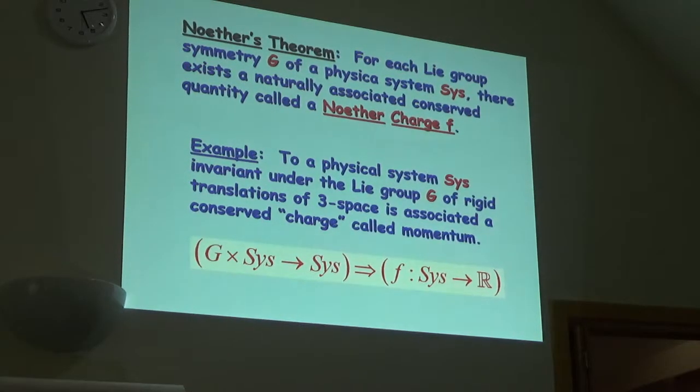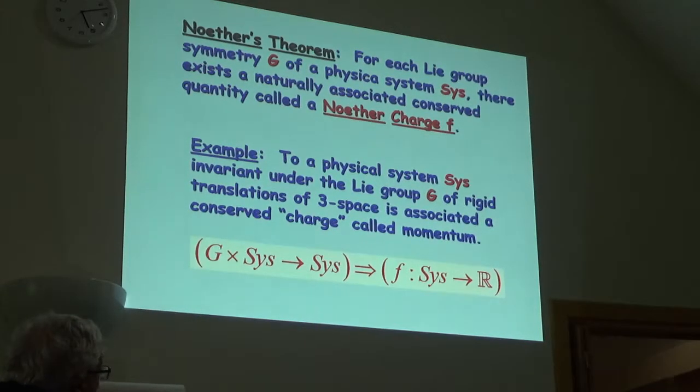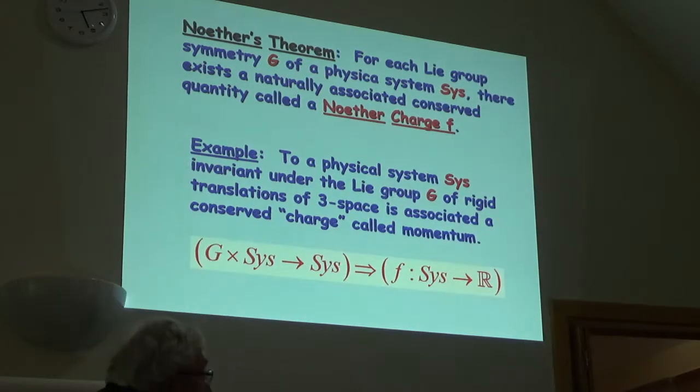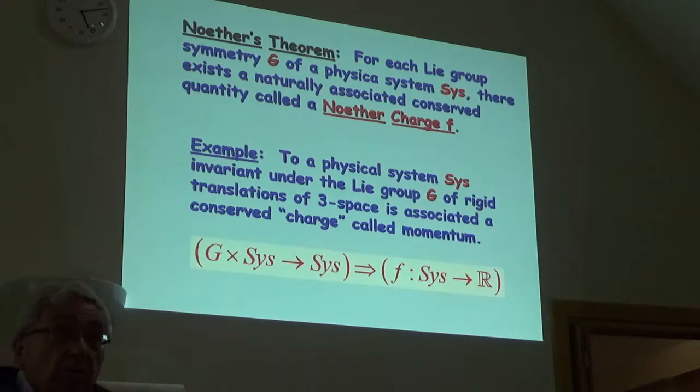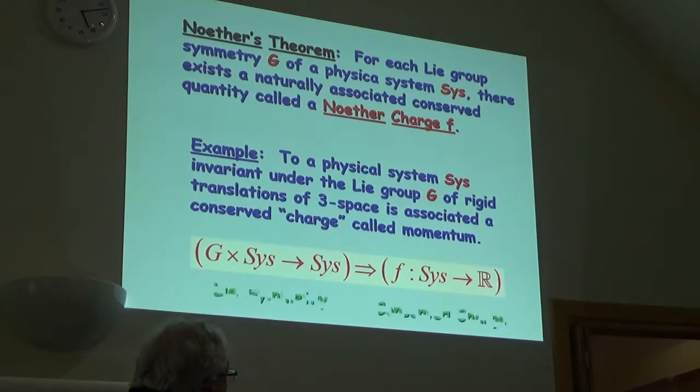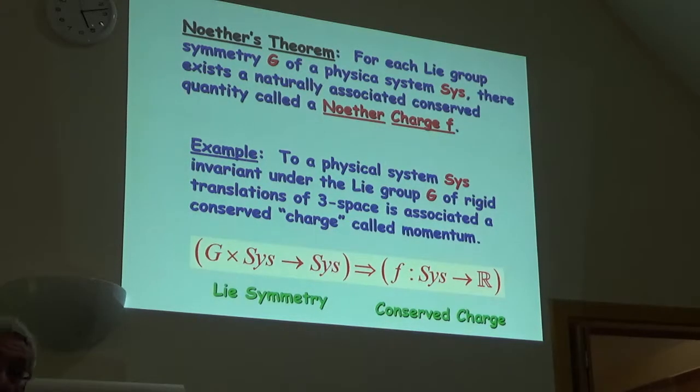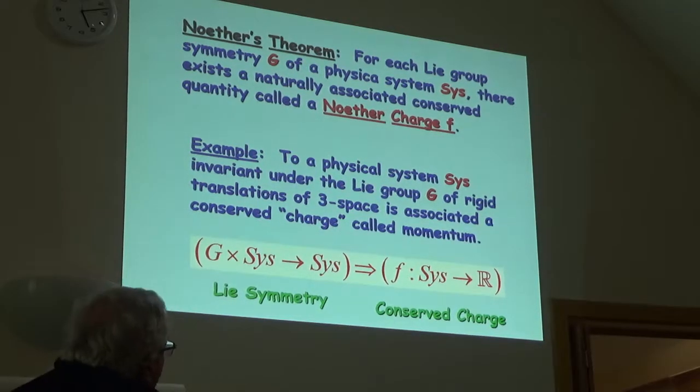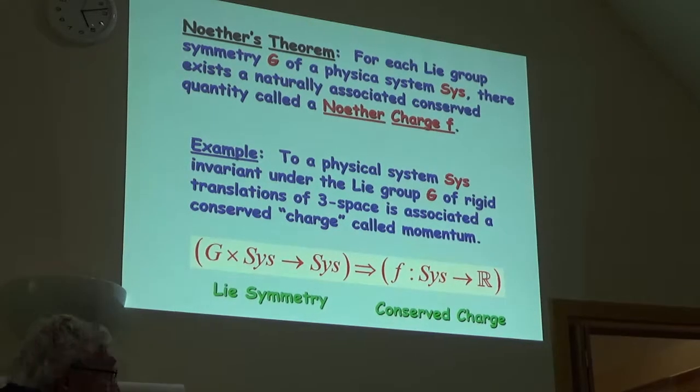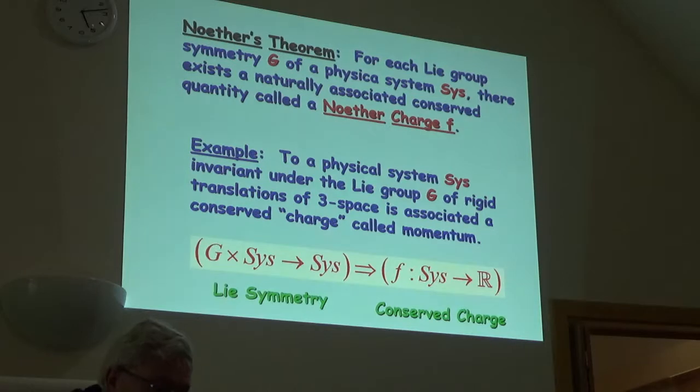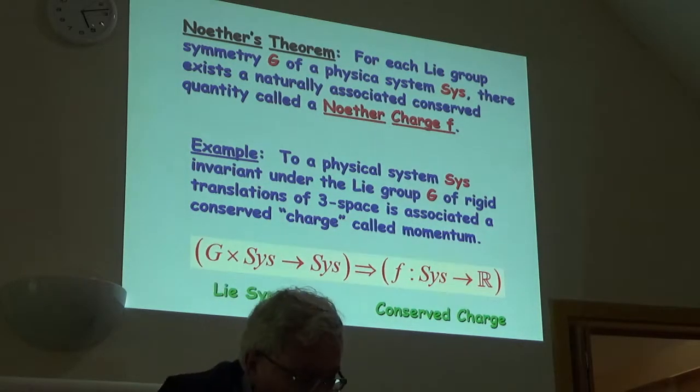And our Lie group G will act on the system, transforming the system itself just as a translation of a mechanical system translates into itself. And we will associate to that a charge which is a map of the state of the system into the real numbers. You can think of momentum as a real number, which is a component of it. And essentially on the left we have a Lie symmetry. And because of the theorem of Emmy Noether, we have a conserved charge that's naturally associated with the system.